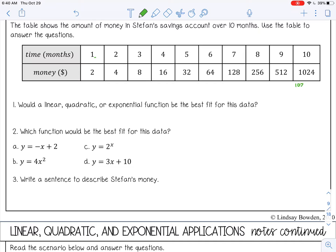I'm going to start down here. 1024 divided by 512 is 2. 512 divided by 256. That's 2. 256 divided by 128. That's 2. 128 divided by 64. That's 2. So it looks like it is exponential.